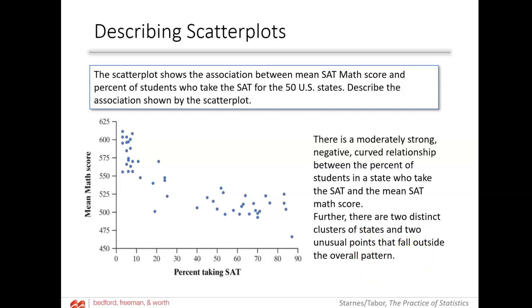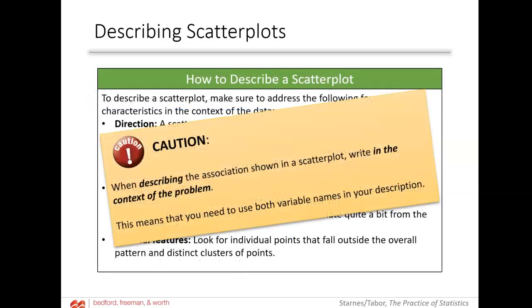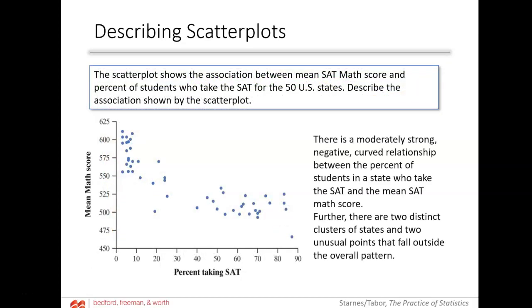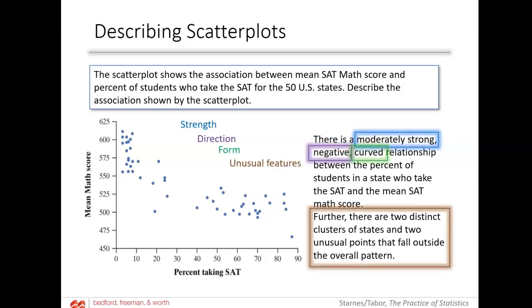The book highlighted and color-coded the description: moderately strong, negative, curved, then it talks about the unusual pieces, with context in the middle. They went ahead and said this had a curved relationship. For our tests, I'm probably going to stick to linear relationships. The important thing is that they hit all four things: direction, form, strength, and unusual features.